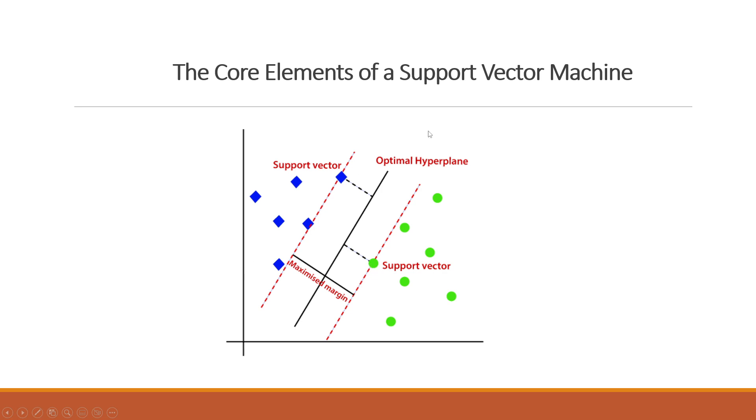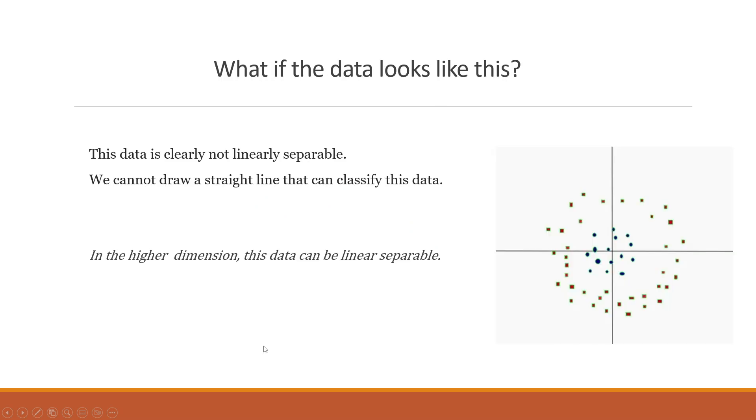The classes may not always be separated by a hyperplane linearly. The classes can be separable in this way as well, right? But you can see this is one class, and this circle is another class. So what to do with that?